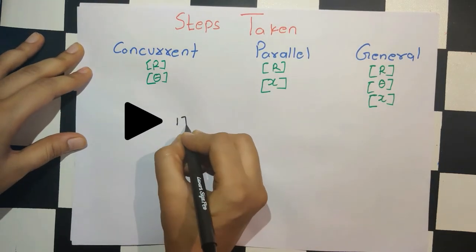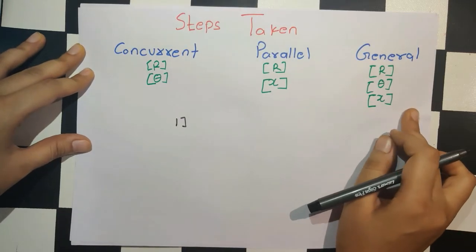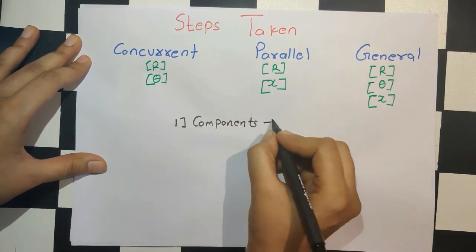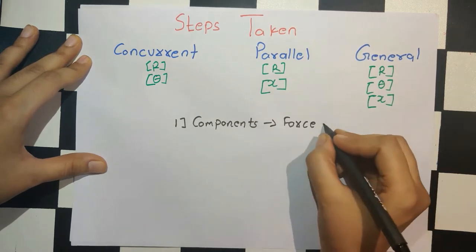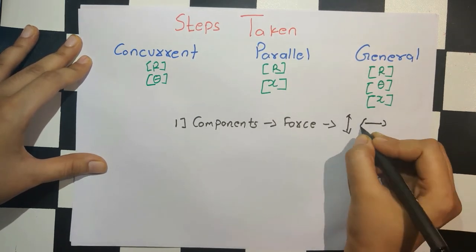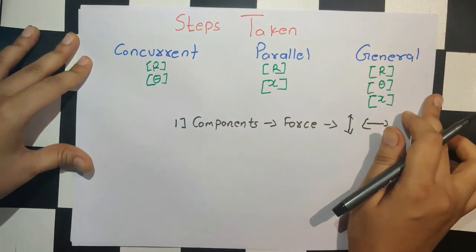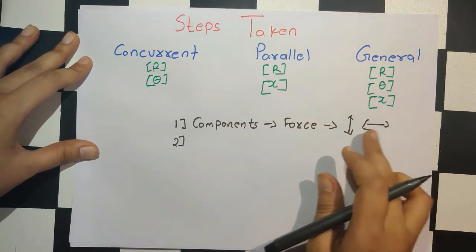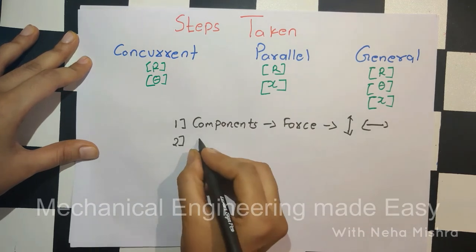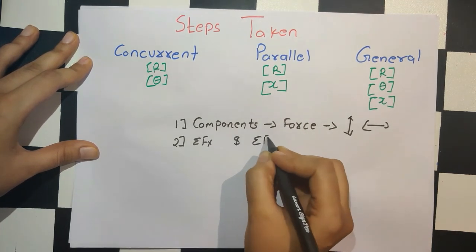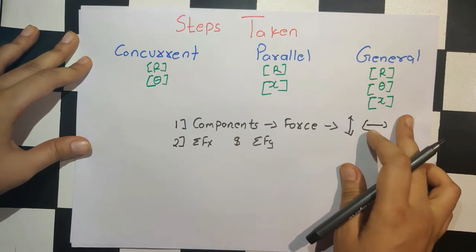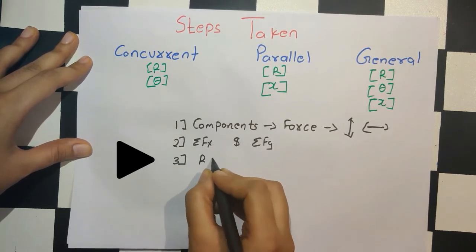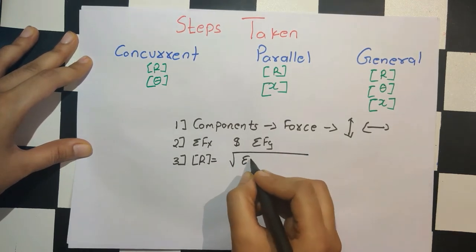Let's quickly revise the steps taken to find all these parameters. The very first step in all three types of coplanar force system problems is to take the components of all forces in two directions — vertical and horizontal. The next step is to find summation Fx and summation Fy for all three types. Then the third step is to find the magnitude of R using the formula R = √(ΣFx² + ΣFy²).